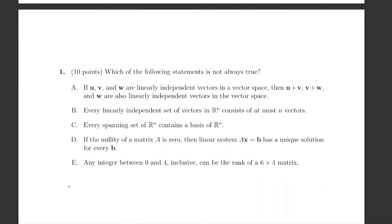This is Midterm 2 from Spring 2022 for MIT 6.5. We're asked to find which of the smaller statements aren't always true. In the first statement, we have three linearly independent vectors. We're trying to see if this linear combination of these vectors will also be linearly independent.